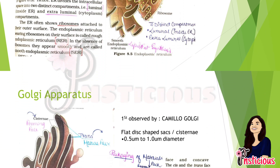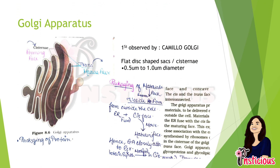The Golgi apparatus was first observed in 1898 by Camelio Golgi, and these structures are found near the nucleus. They are named after him as Golgi bodies. They are mainly flat, disk-shaped structures. The outer portion is called the cis face, also known as the forming face, and the inner concave portion is called the trans face, also known as the maturing face. They help in the packaging of proteins.